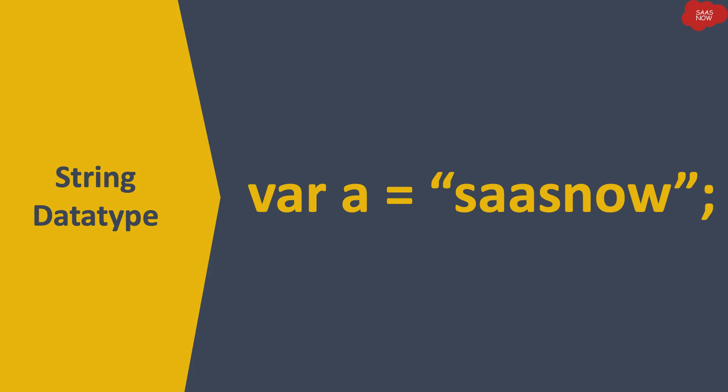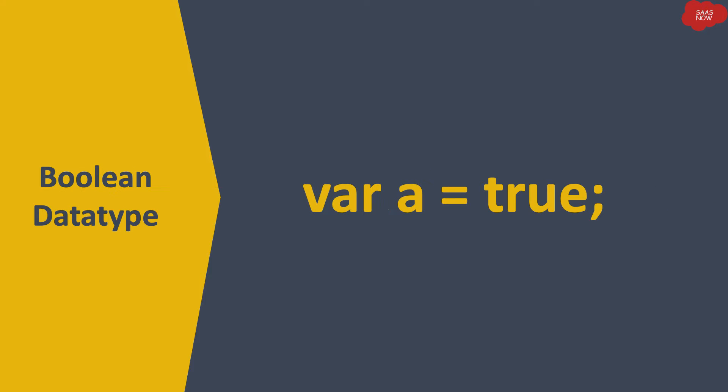Another data type is string. If I declare a variable 'a' and store some alphabetical characters in quotes, like 'SASNow', then 'a' is called a string data type variable. You also have the boolean data type variable in JavaScript, in which a variable will store only true or false.